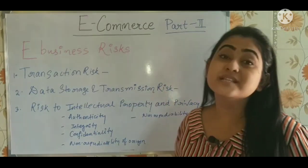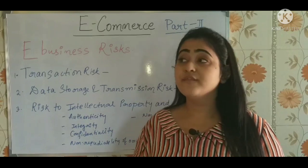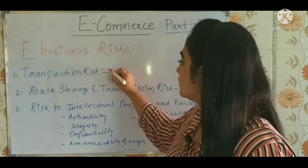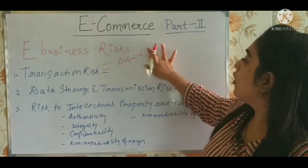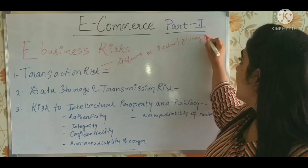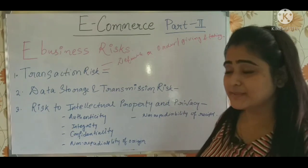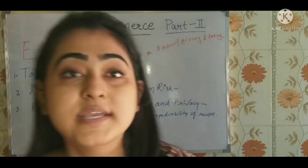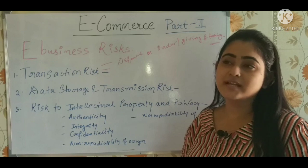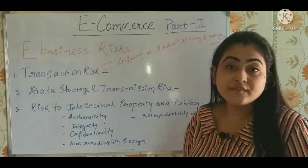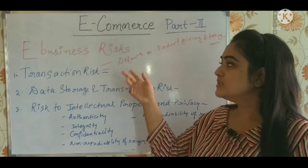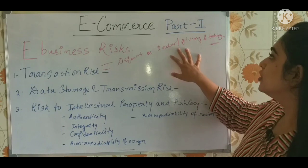In this second part, we are going to study some e-business risks. Whenever we are conducting business over the internet, there are certain unavoidable risks. The first one is transaction risk. Here three things are involved. The first is default on order — that is, giving and taking. Sometimes the customer says they have made the payment, but the seller says they haven't received it, or the seller says they sent the product but the customer says they haven't received it.